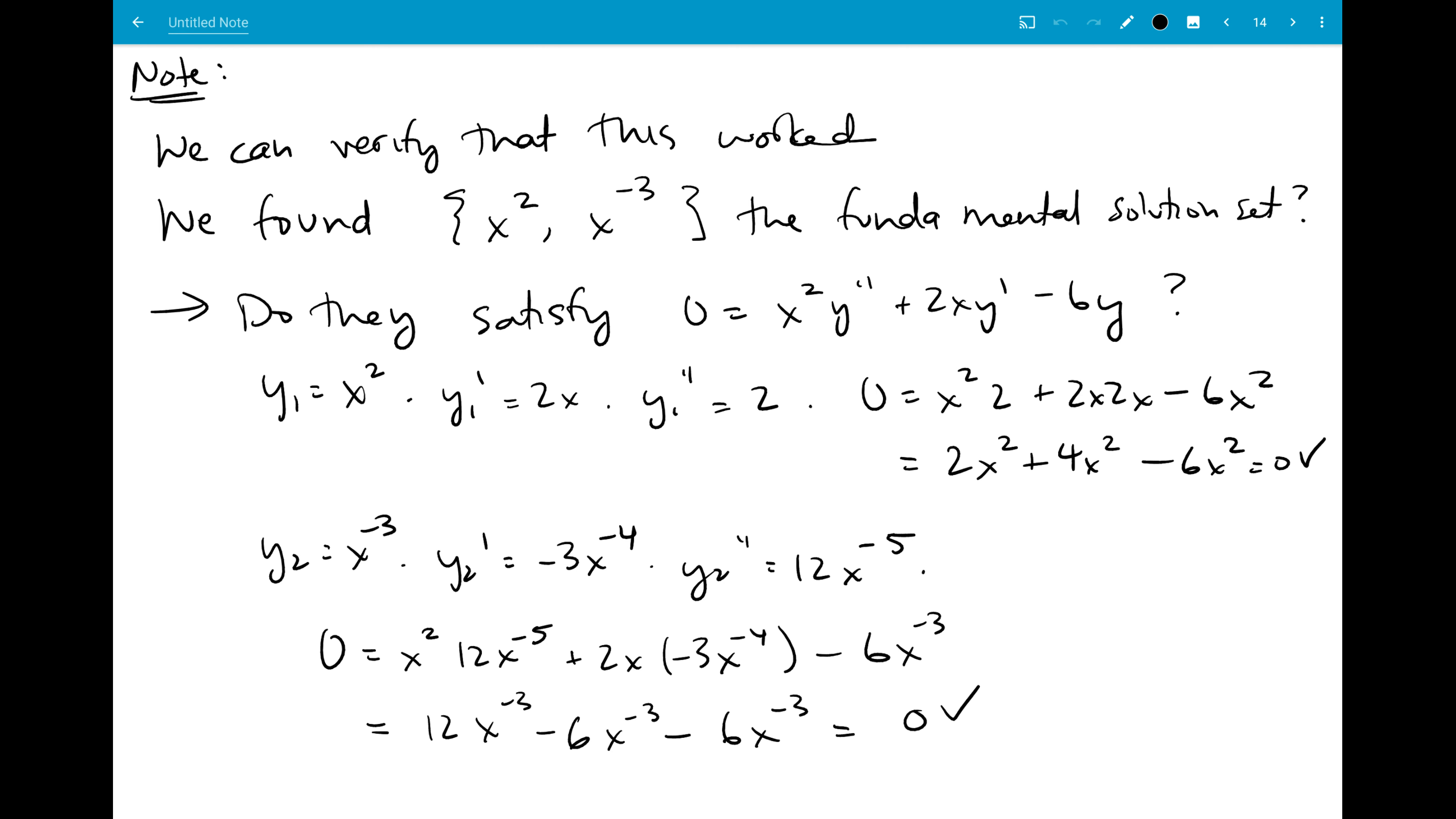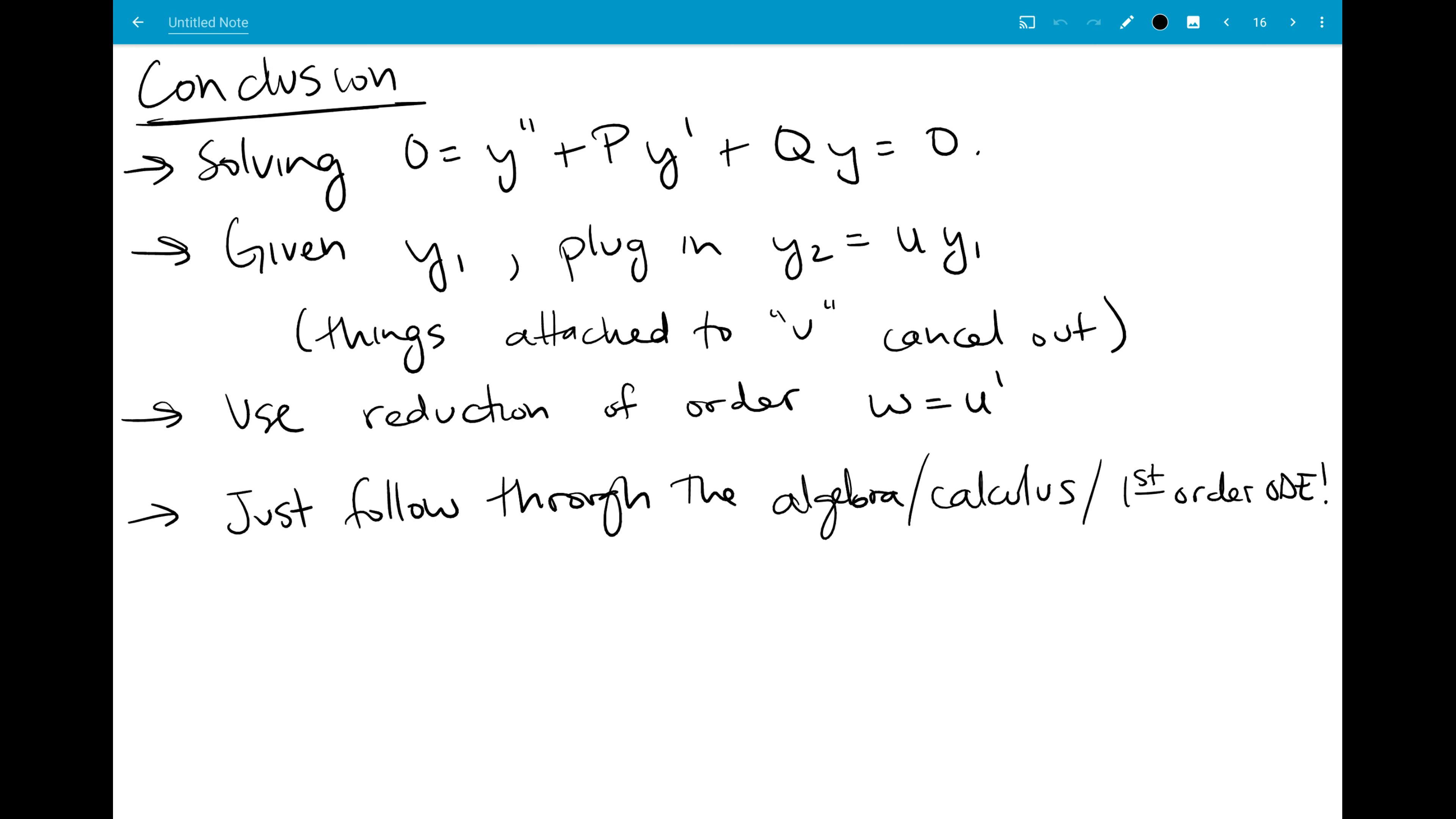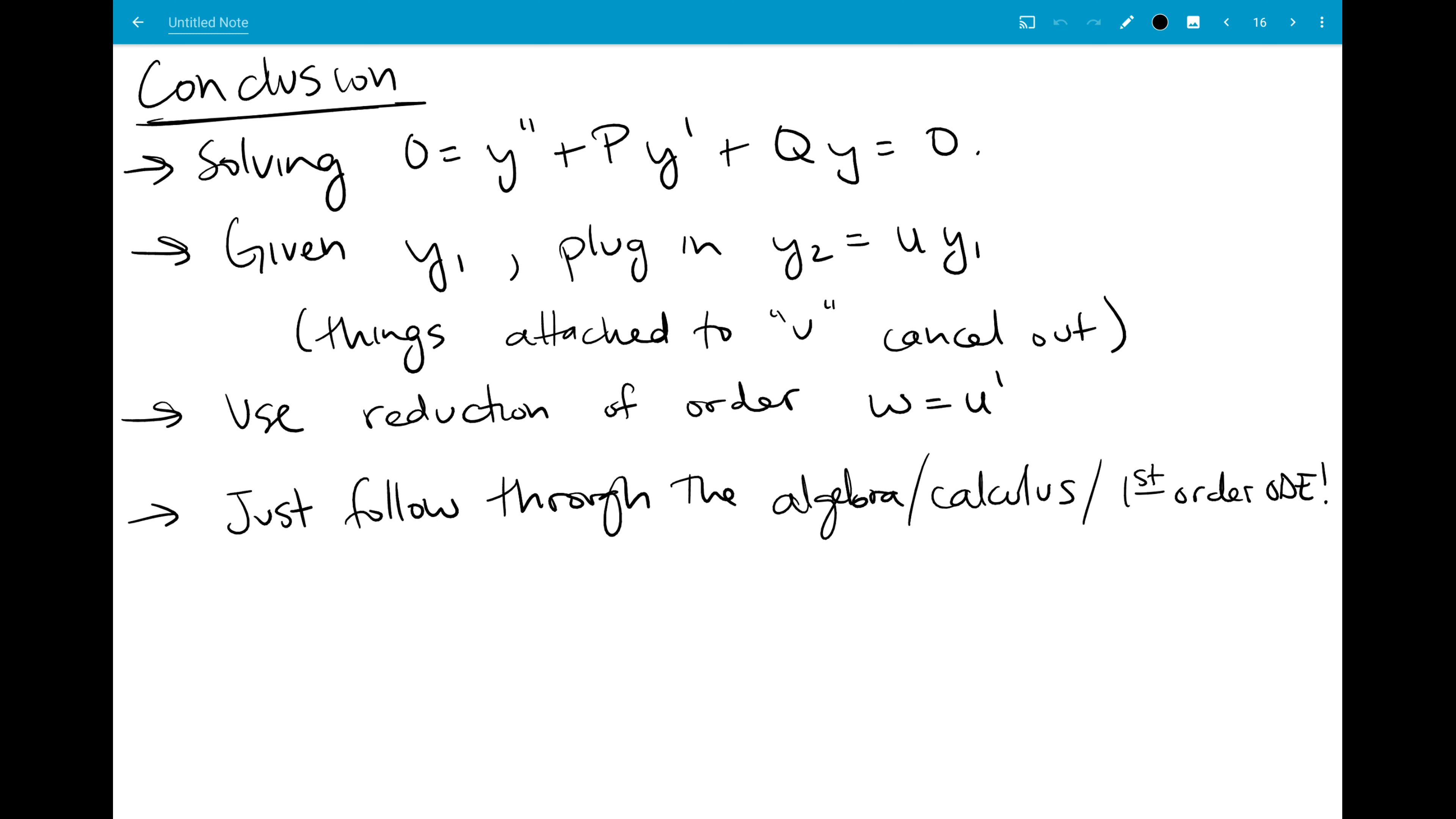And then we just used methods from last class to show that this worked because sort of I told you that this method would work, and there was no reason for you to believe that it actually would. So this was good practice of last section stuff, I guess. But again, in general, I don't actually want you to do this. Reduction of order will always work, and you can just trust that it will. So I don't need you to verify it.